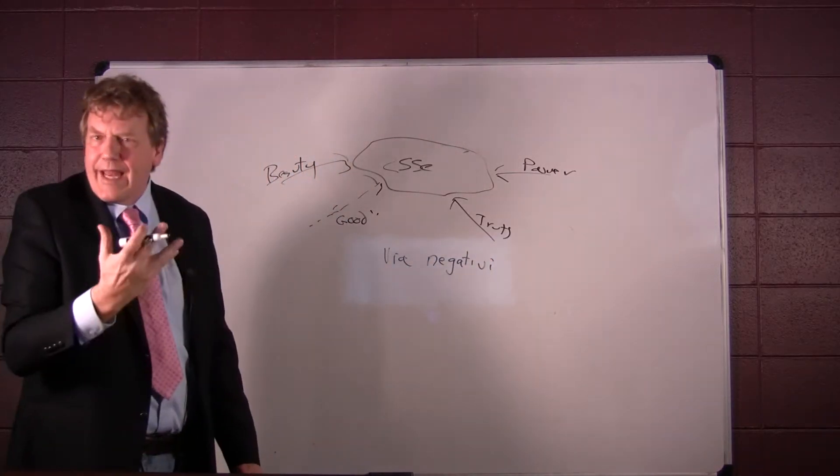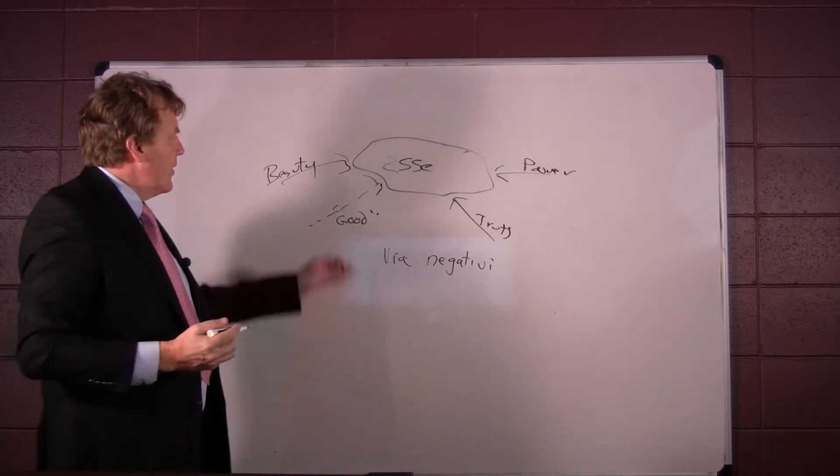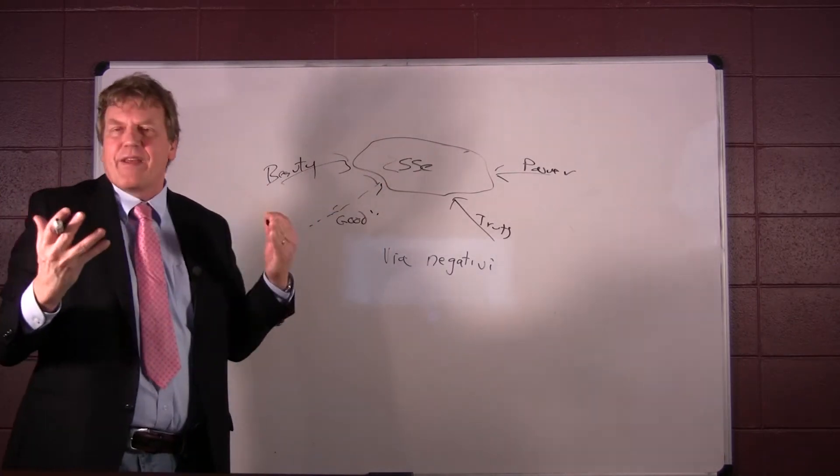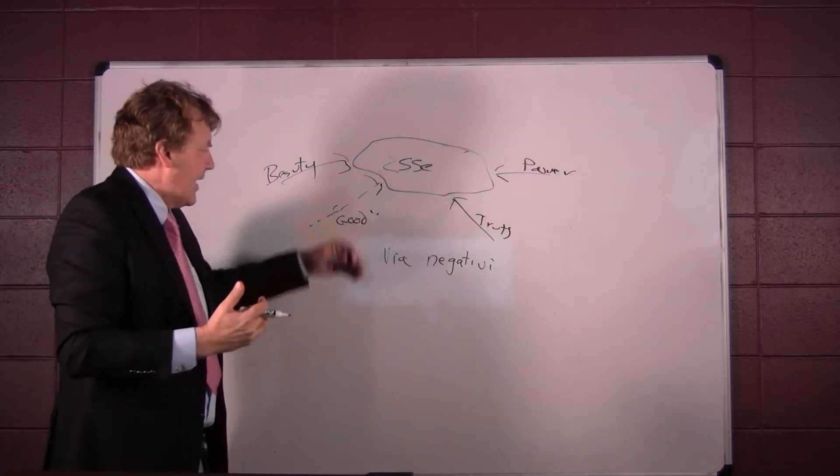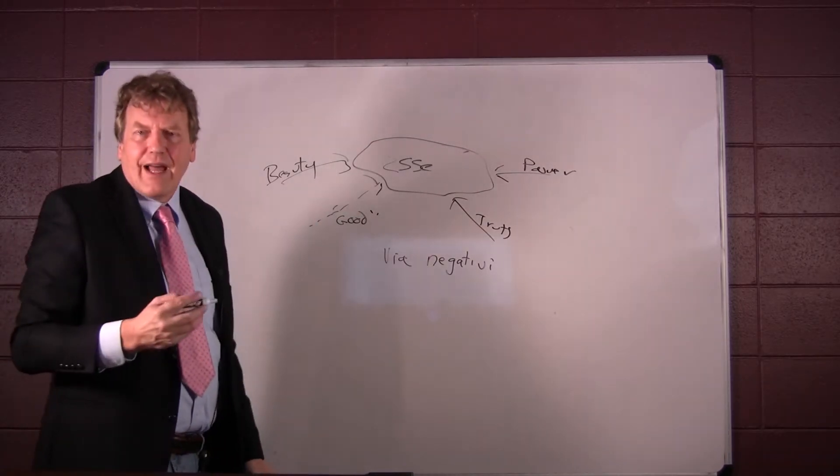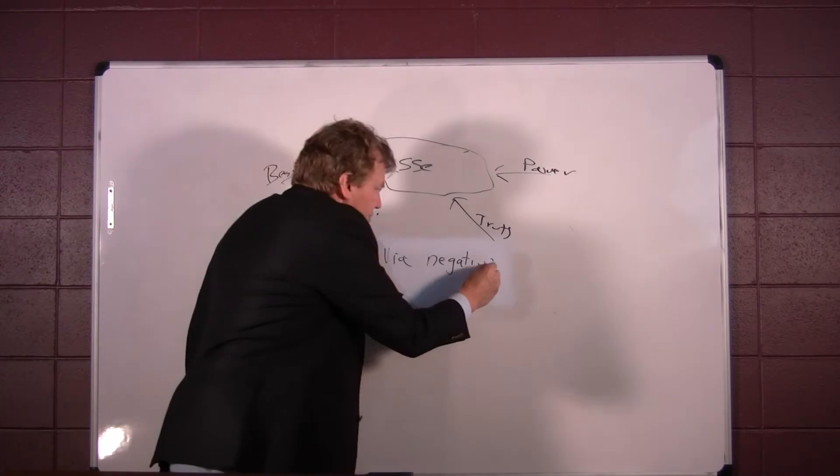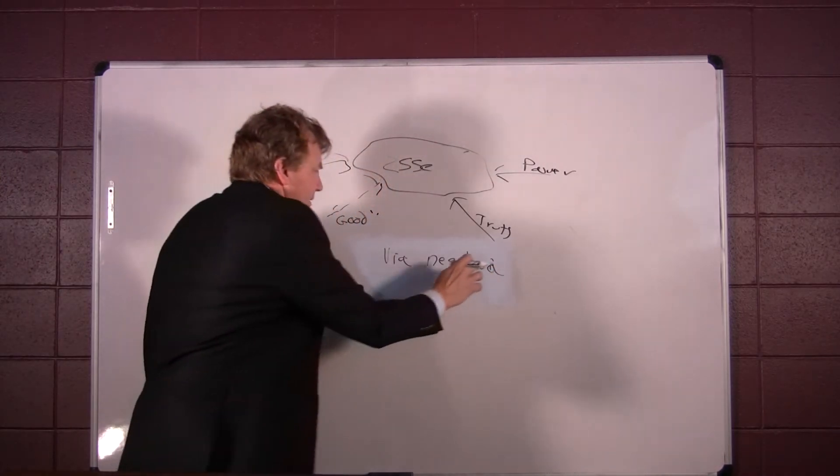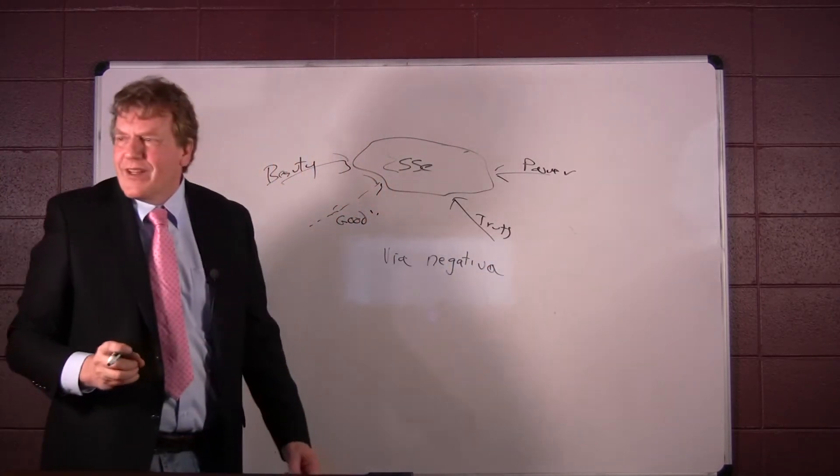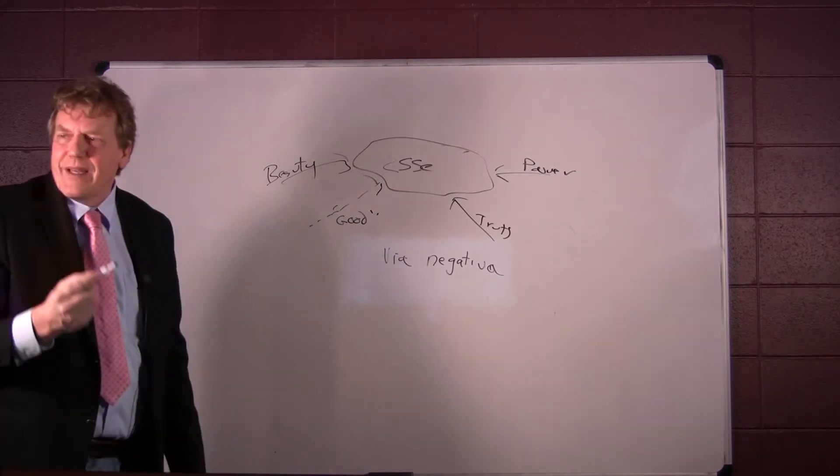The via negativa, that when confronted with God, we literally can't say anything of God, because if we say something of God, we are saying what God is not, right? That should be an A. Nobody would end in a Latin phrase like that with an I, right? It's going to be via negativa.